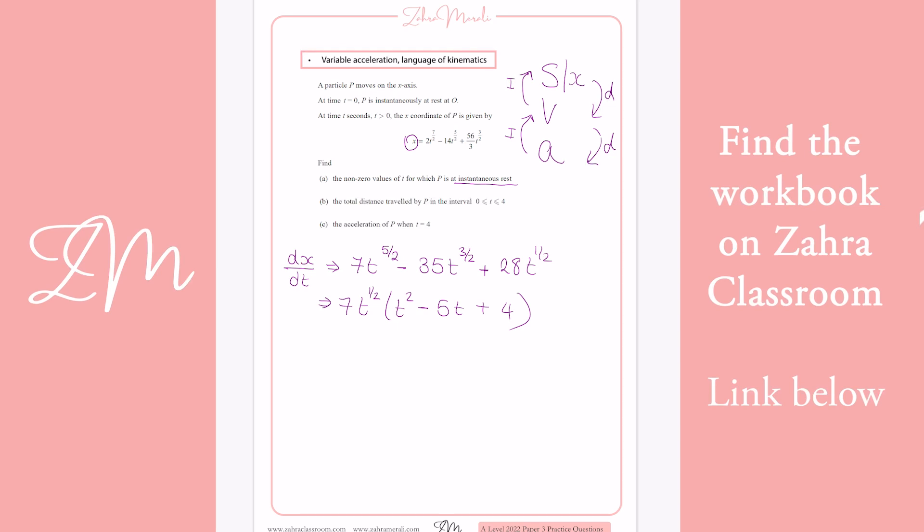The question says that it wants the non-zero values. So we're not going to worry about t equaling 0. So this first bit equaling 0, we're just going to do that. You either stick it in your calculator or you can factorize it quickly. And you get t equals 1 and t equals 4.